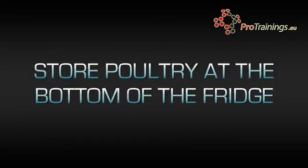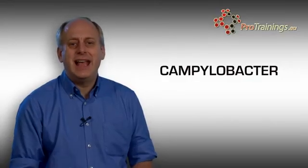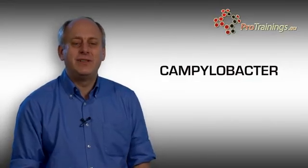Poultry should be covered and stored at the bottom of the fridge so that the fluids cannot drip onto other foods and at a temperature of less than 5 degrees Celsius.